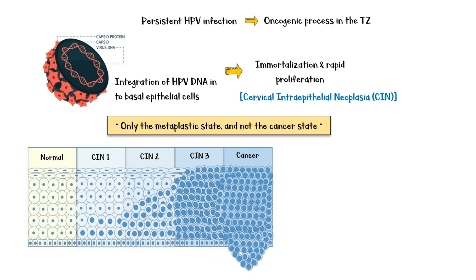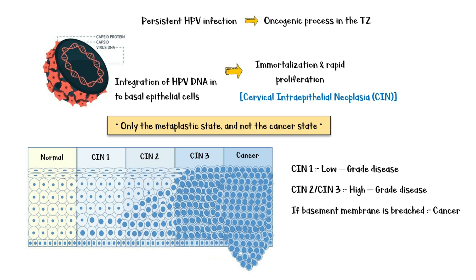Stage 1 CIN indicates low-grade disease, whereas stage 2 and 3 CIN indicates high-grade disease. If the basement membrane is breached, it is considered cervical cancer.